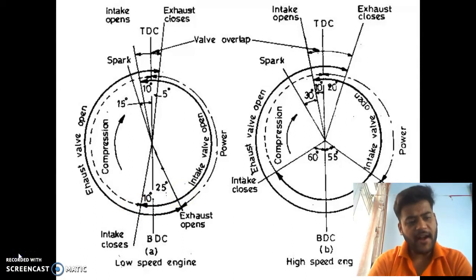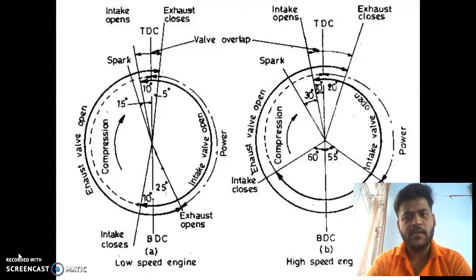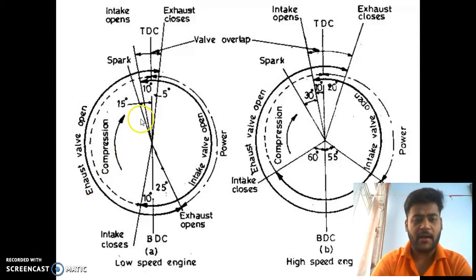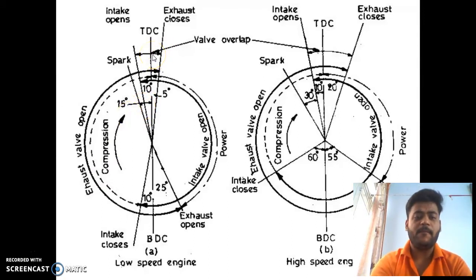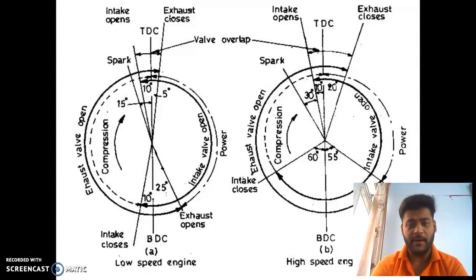At the end of the compression stroke combustion has to happen, but due to lags we know that this process cannot be isochoric. So an advanced spark is given about 15 degrees before TDC, so that before the piston comes to TDC, the major combustion process should be completed. After this the power stroke starts.